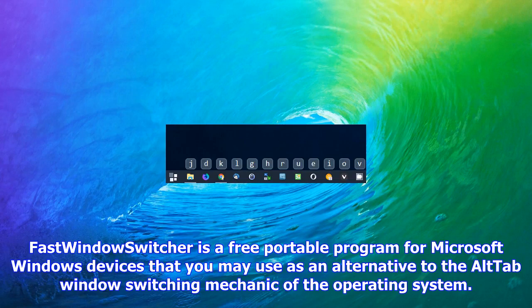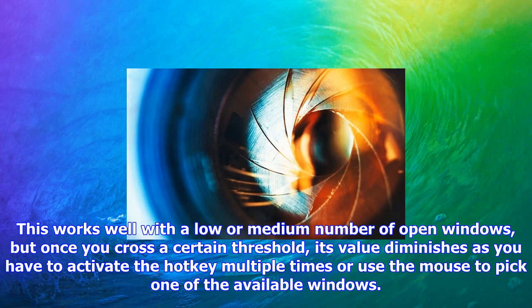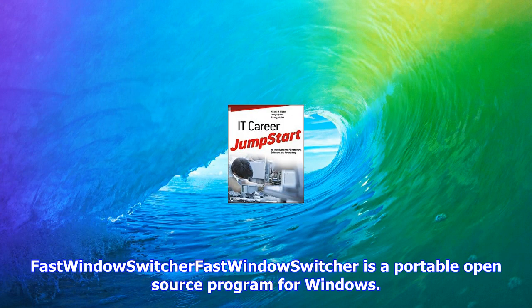Fast Windows Switcher is a free portable program for Microsoft Windows devices that you may use as an alternative to the Alt+Tab window switching mechanic of the operating system. Windows users may use the shortcut Alt+Tab and Shift+Tab to quickly go through the list of open program windows to activate one and bring it to the front. This works well with a lower or medium number of open windows, but once you cross a certain threshold its value diminishes, as you have to activate the hotkey multiple times or use the mouse to pick one of the available windows.